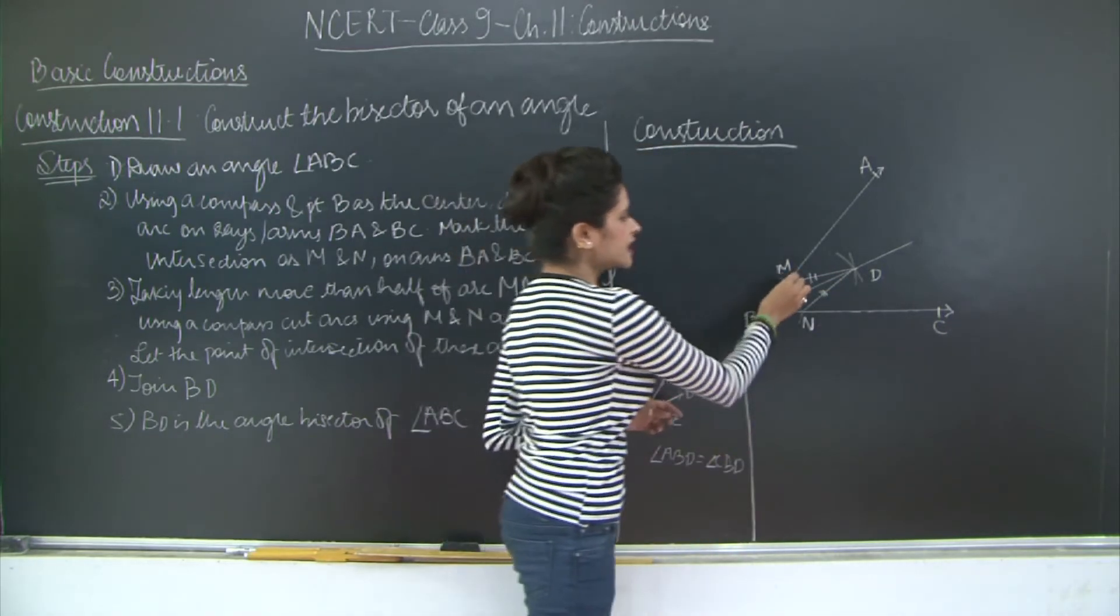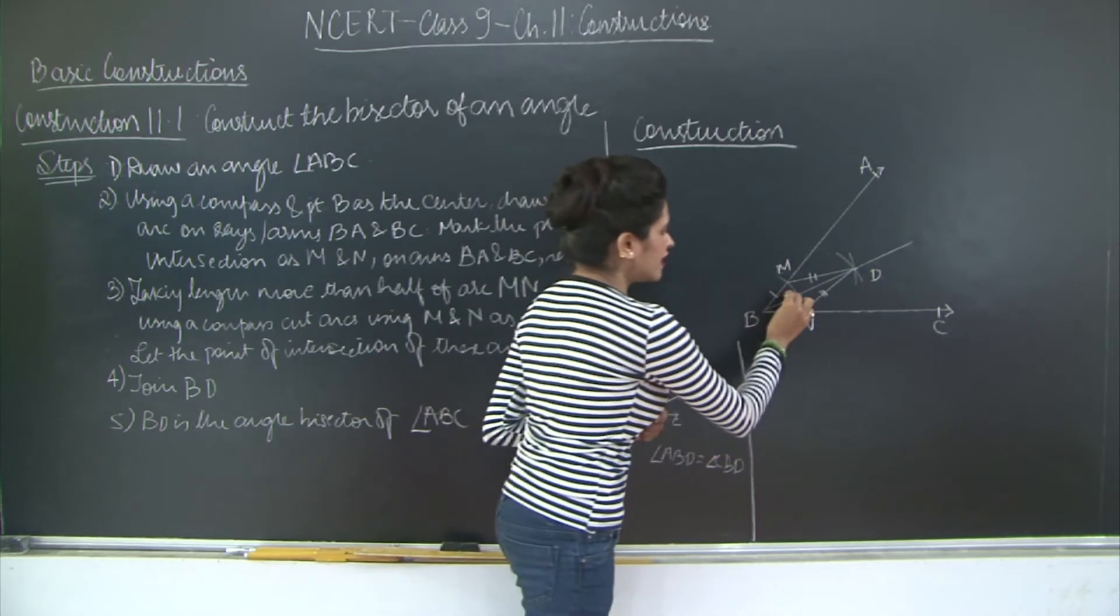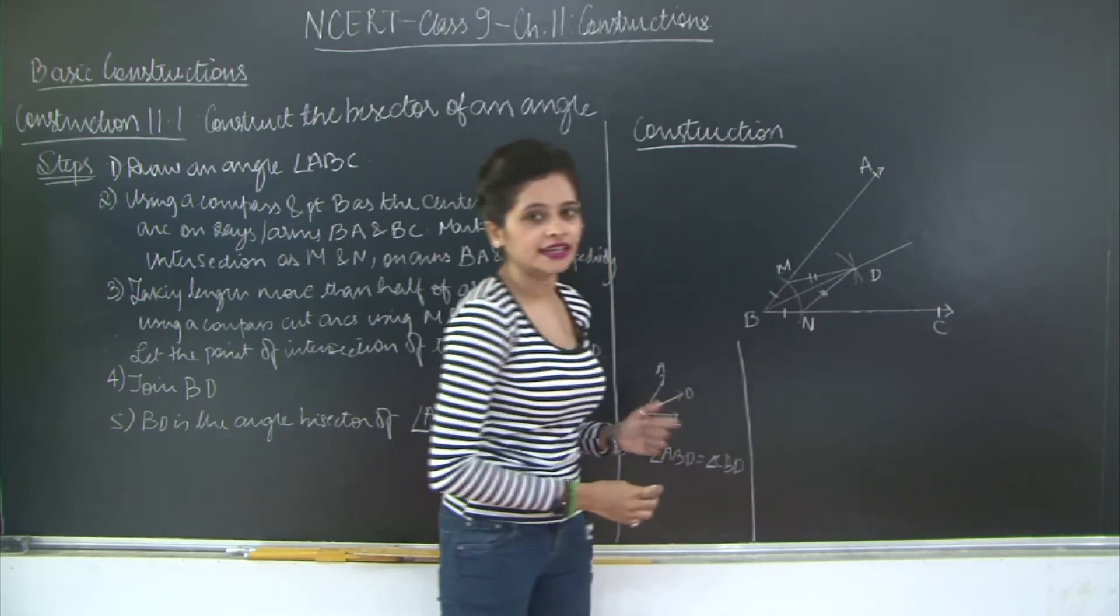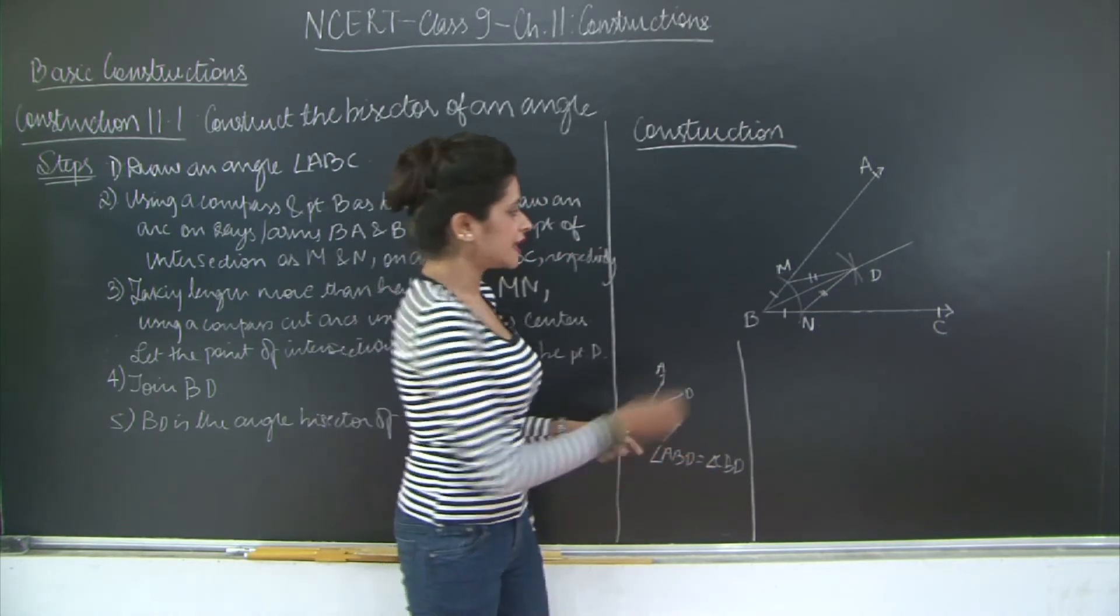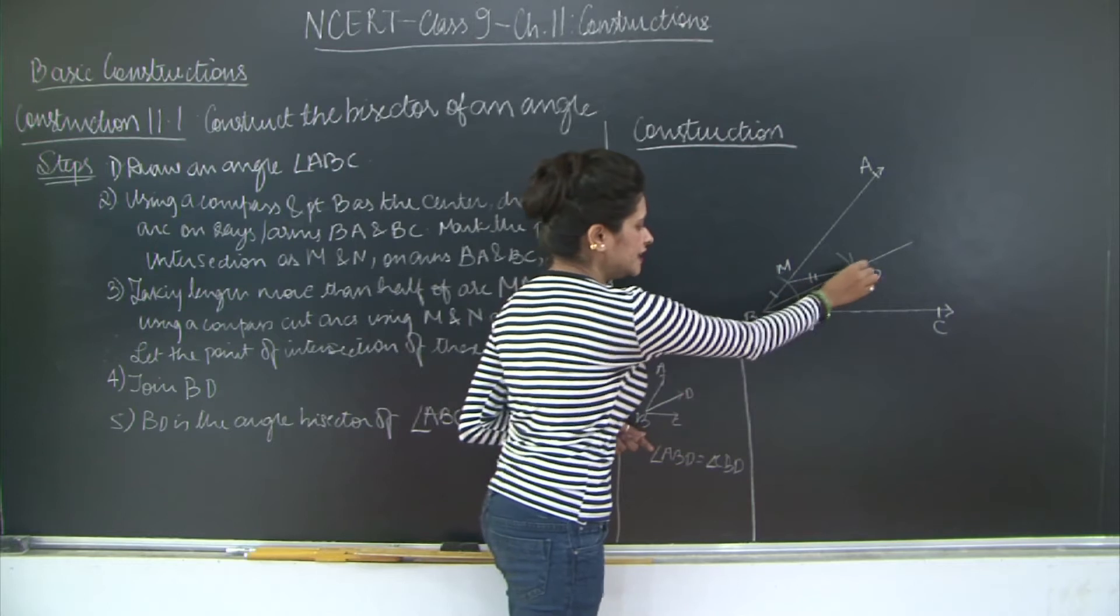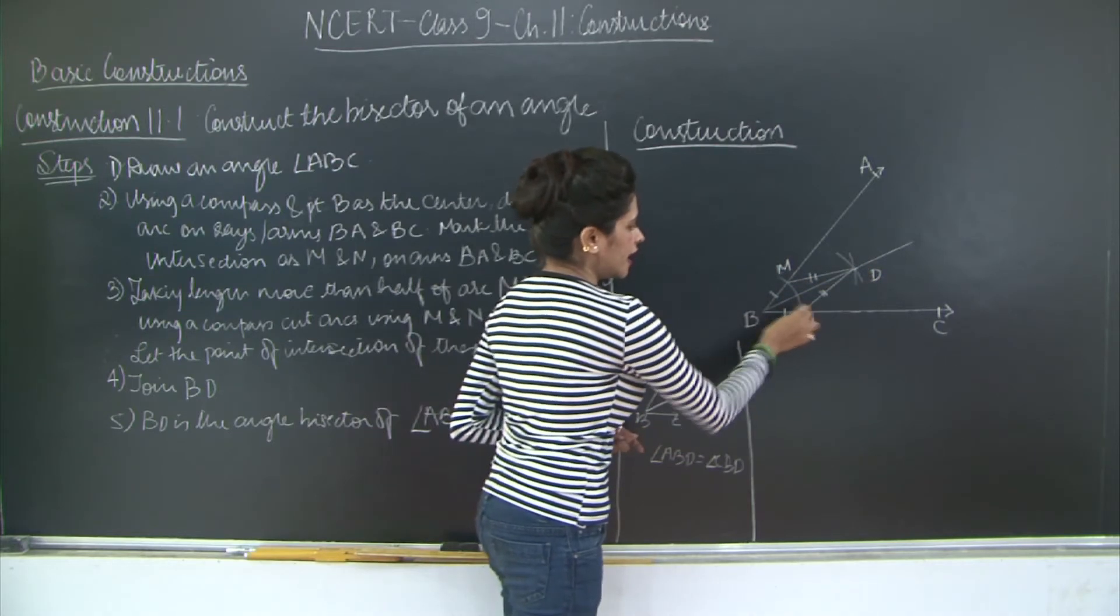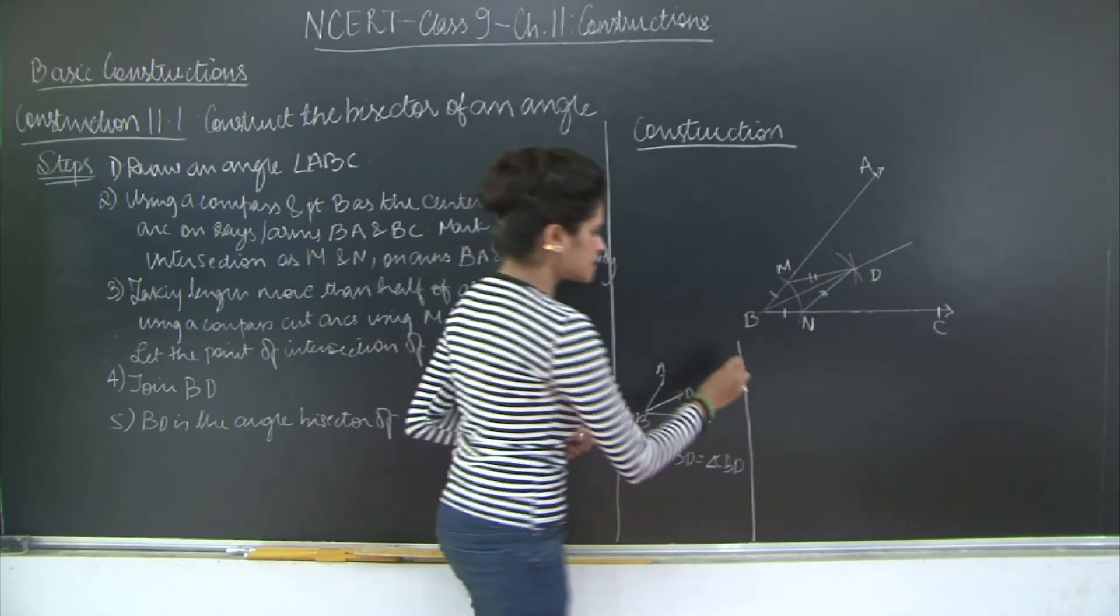Why? Because they are arcs of the same length and you have this as the common side BD. Therefore the two triangles are congruent to each other by the side side side test of congruence. Therefore I can say that angle MBD is equal to angle NBD. Right? So let us prove this.